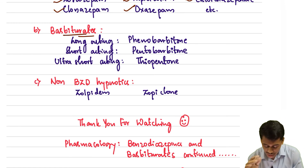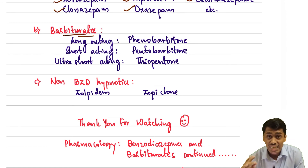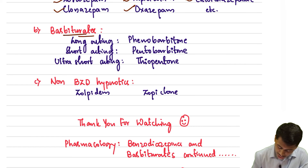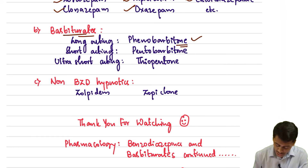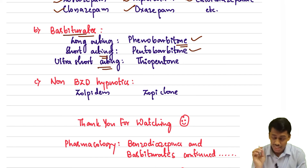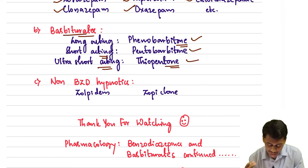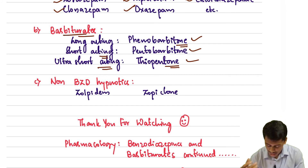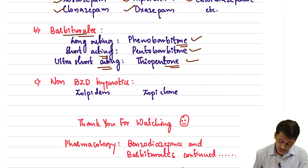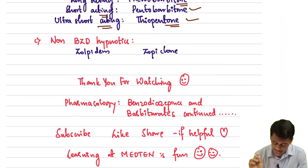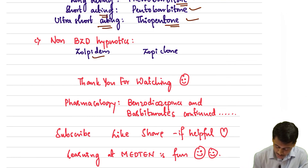The next class is the barbiturates. We have three types: long-acting, short-acting, and ultra-short-acting. The long-acting barbiturate is phenobarbitone. The short-acting is pentobarbitone. The ultra-short-acting barbiturate is thiopentone sodium. We also have some non-benzodiazepine hypnotics — examples include zolpidem and zopiclone.